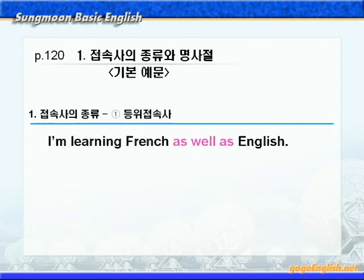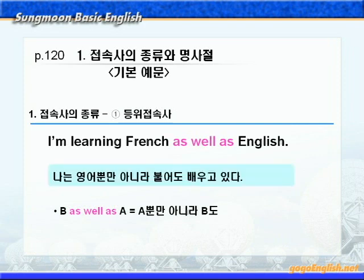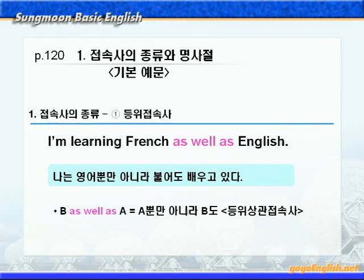'I'm learning French as well as English.' B as well as A 하면 A 뿐만 아니라 B도 이런 뜻이니까 나는 영어뿐만 아니라 불어도 배우고 있다. as well as는 French와 English라는 두 단어를 대등하게 연결시켜주는 접속사구로, 이런 것을 등위상관접속사라고 합니다. 다음은 종위접속사, 즉 종속접속사를 설명하는 2번을 보겠습니다.